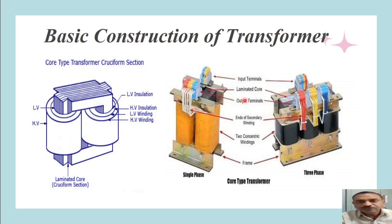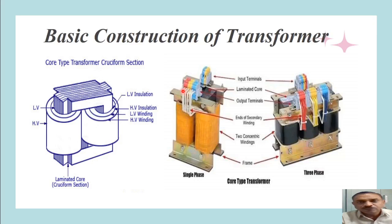Now let us see the right side figure where you can observe two transformers — one is the single phase core type transformer and another is the three phase core type transformer. Both transformers are mounted on a frame. For the single phase core type transformer, there are two concentric windings totally enclosed by insulated paper. The windings have layers of LV and HV type. Their terminals are brought to the top of the core. On one side we can see input terminals and on the front side we can observe output terminals.